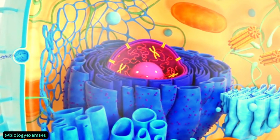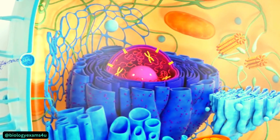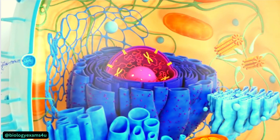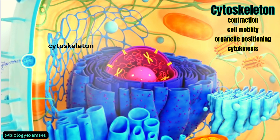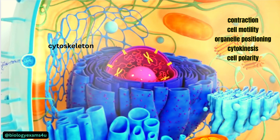In the background you can see a meshwork called the cytoskeleton. The cytoskeleton is a complex dynamic network of interlinking protein filaments present in the cytoplasm of all cells. It is responsible for contraction, cell motility, movement of organelles and vesicles through the cytoplasm, cytokinesis, establishment of intracellular organization, cellular polarity, and many other functions essential for cellular homeostasis and survival. It provides structure and shape to the cell.